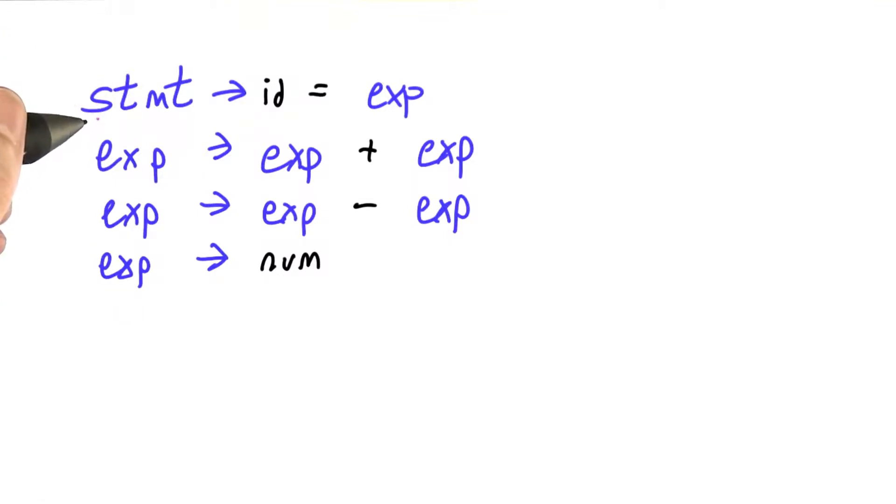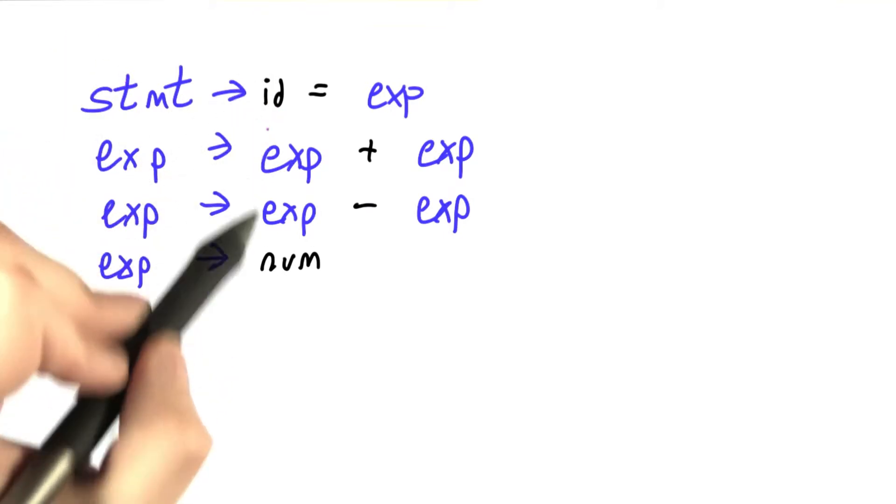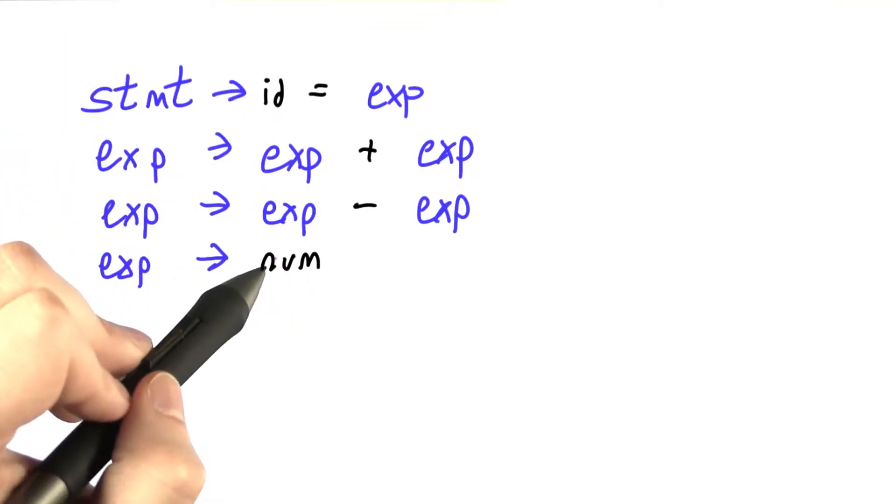Here I have a grammar that we've seen before, but I've abbreviated it still further. Instead of identifier, I've just written ID, and instead of number, I've just written num.